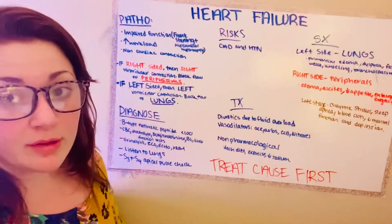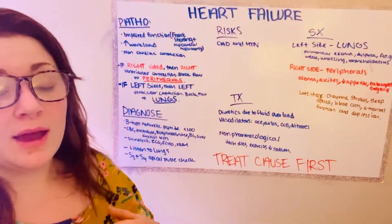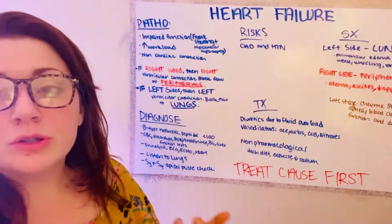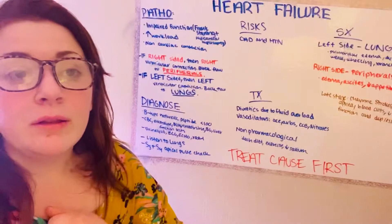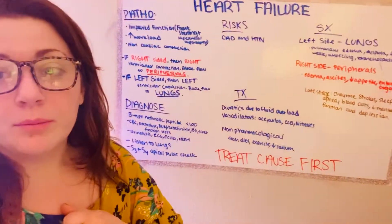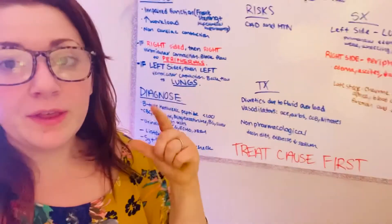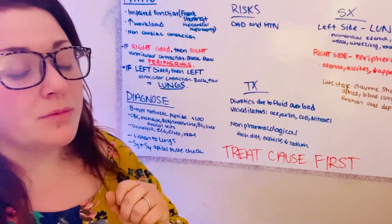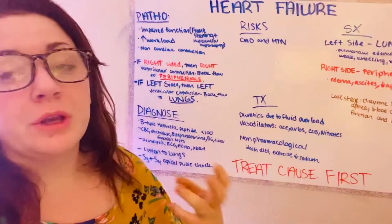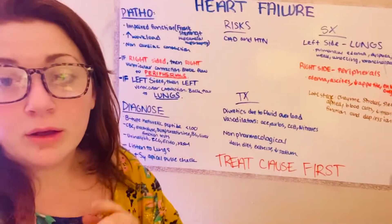There's a difference between right versus left sided heart failure. If it's right-sided heart failure, that means the right side is going to have that impaired ventricular contraction. And remember, the right side goes to the peripherals, so there's a block of blood flow to the peripherals. Whereas with left side — I always think left lungs, both start with L — so the left side has that abnormal ventricular contraction and there's going to be a block of blood flow to the lungs.